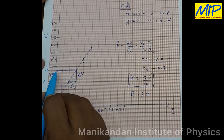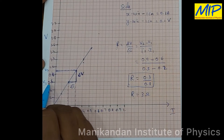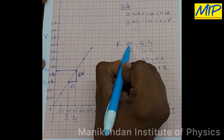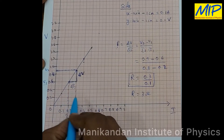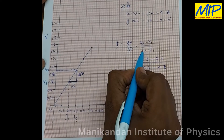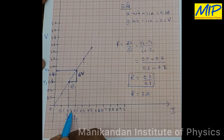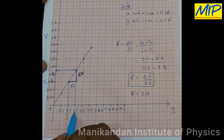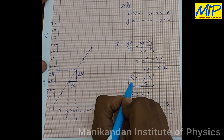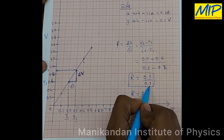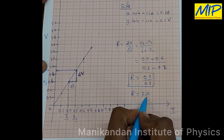From the straight line, V2 is 0.9 volt and V1 is 0.6 volt, so delta V equals V2 minus V1 equals 0.9 minus 0.6 equals 0.3 volt. Delta I equals I2 minus I1 equals 0.3 minus 0.2 equals 0.1 ampere. Therefore R equals 0.3 divided by 0.1, so R equals 3 ohm.